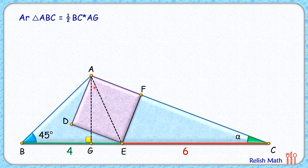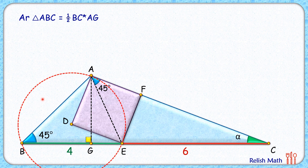We know the inner square diagonal makes an angle of 45 degrees with the side length. Now let's concentrate on triangle ABE and draw a circle passing through vertices A, E, and B. AE is the chord making an angle of 45 degrees at the circumference. By the converse alternate segment theorem, at point A the tangent will also make an angle of 45 degrees with the chord.